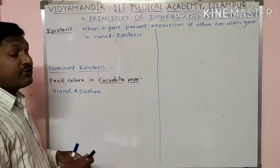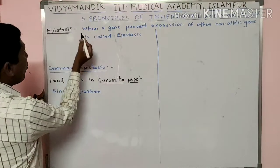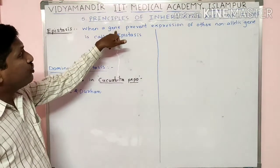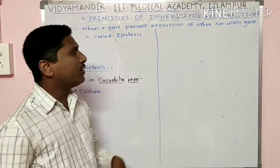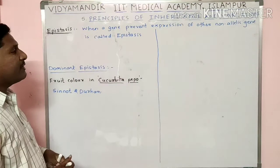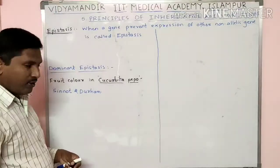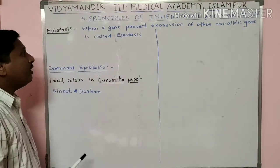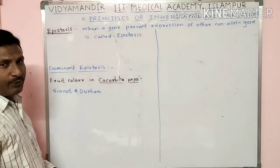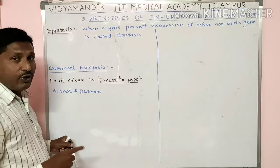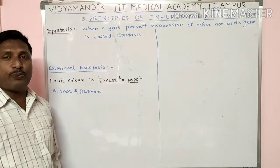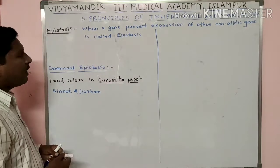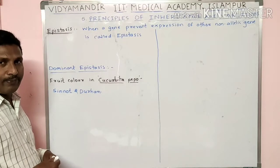What is epistasis? When a gene prevents the expression of another non-allelic gene, it is called epistasis. In other words, when one gene prevents or inhibits another non-allelic gene from being expressed — that phenomenon is called epistasis.